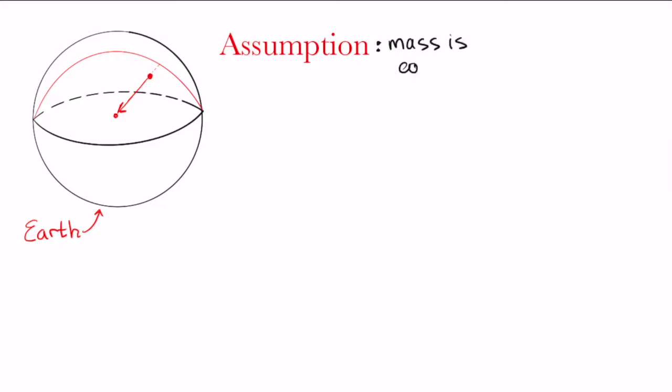It all stems from the assumption that mass is equidistributed, meaning that if you take two same volumes inside Earth, regardless of the allocation, then they will have the same mass.